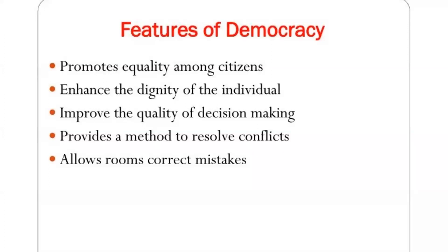The next important feature is that democracy always allows room to correct mistakes. In democracy, we sometimes choose leaders who do not work in favor of communities, but we can correct our mistake in the next election. Many times, government also takes decisions not in favor of public welfare, so the government can change their decision. This does not happen in a non-democratic government, where a single person takes every decision and people must accept it. Correcting mistakes is possible in democracy.